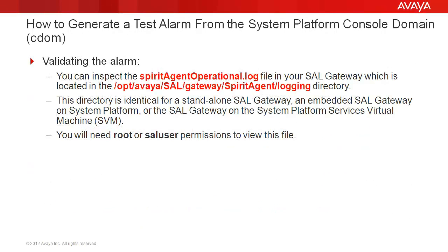Finally, a note about validating the alarm. You can inspect the spirit-agent-operational.log file in your cell gateway, which is located in the /opt/avaya/cell/gateway/spirit-agent/logging directory. This directory is identical for a standalone cell gateway, an embedded cell gateway on system platform, or the cell gateway on the system platform services virtual machine. You will need root or cell user permissions to view this file.